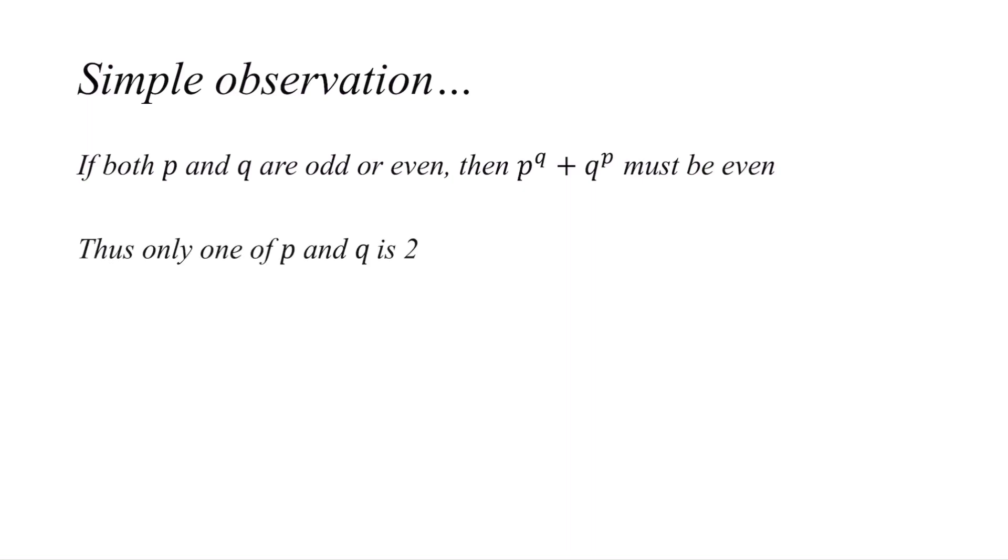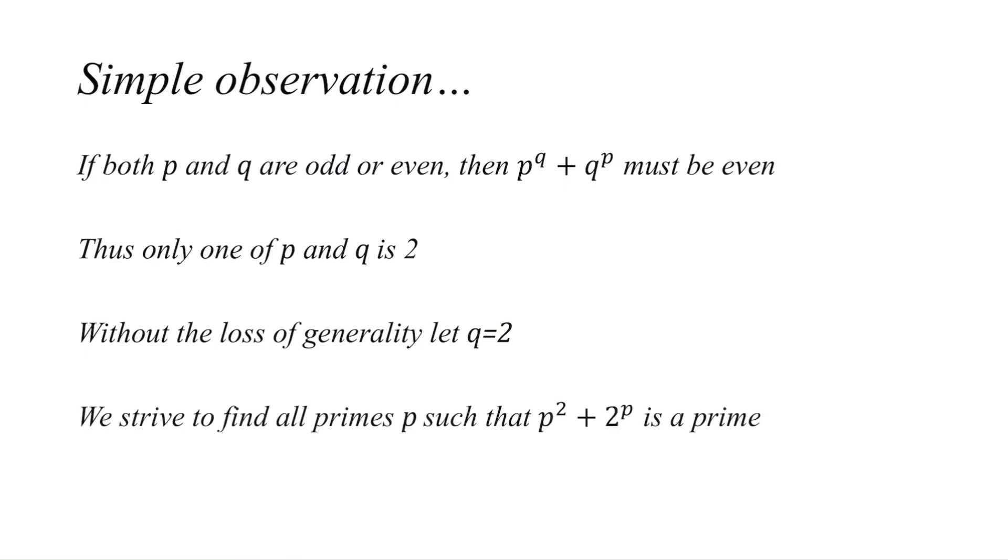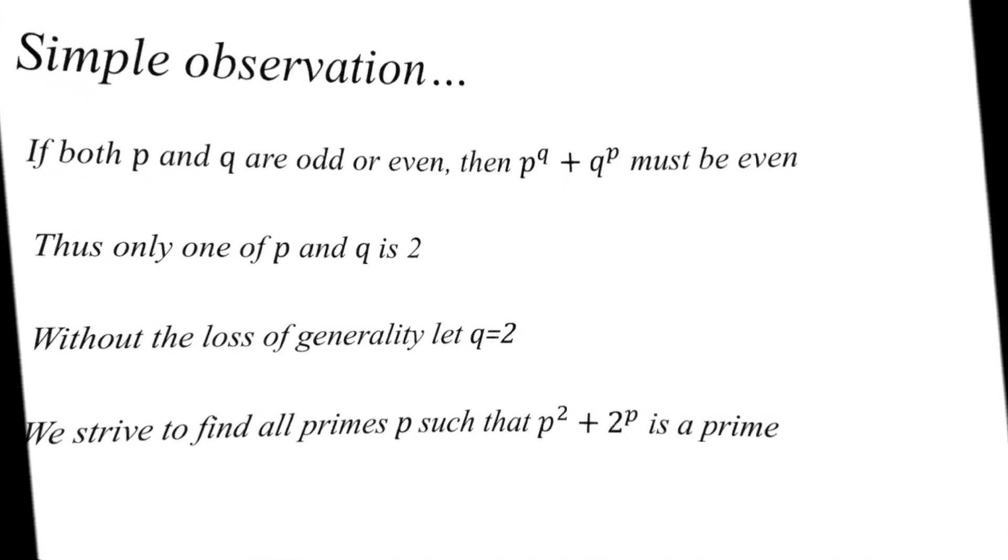Therefore, one of p and q is 2, because the only even prime is 2, and obviously p to the power of q plus q to the power of p is larger than 2. Without loss of generality, let q equal 2. We strive to find all primes p such that p squared plus 2 to the power of p is a prime.